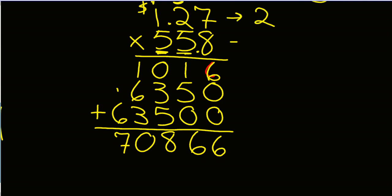But I have to remember where my decimals were. Here were two decimal places, and here was 1, so I have a total of 3. I'm going to have to move my decimal over 1, 2, 3 spaces to the left. So, my decimal point will be right here. The answer is $70.87, if we round to the nearest penny.